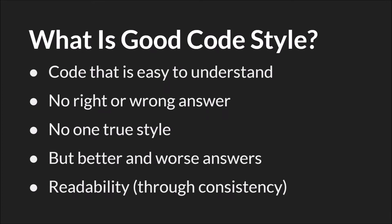We've talked about what code style is and why it's important. Now let's go through some elements of what makes code style good. The primary thing that makes a code style good is that it is easy to understand. Ultimately, there's no right or wrong answer — no one true style you must follow, but there are better or worse answers. You're striving for readability through consistency. While it is important to have a good code style, you don't have to develop it overnight. Strive for consistency within a single project, but across different projects, try different things. Pay attention to how other people code, look at their styles, copy what you like.